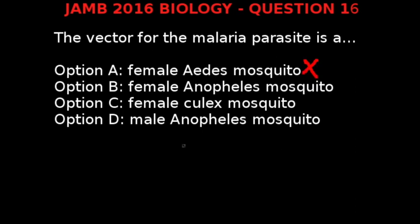The answer is not female Aedes mosquito because the Aedes mosquito acts as vector for yellow fever. The answer is not female Culex mosquito either because the Culex mosquito is a genus of mosquitoes, several species of which serve as vectors of diseases of birds and other animals, including arbovirus infections such as West Nile virus, Japanese encephalitis, and St. Louis encephalitis. They also cause filariasis and avian malaria.